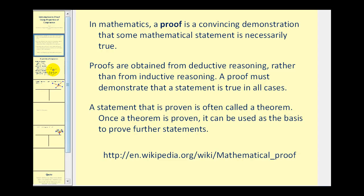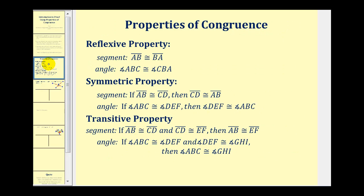Let's start by taking a look at the properties of congruence for segments and angles. Notice the reflexive property states that for congruent segments, we can change the order of the endpoints. And for congruent angles, we can change the order of the points, but not the location of the vertex.